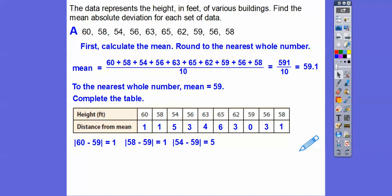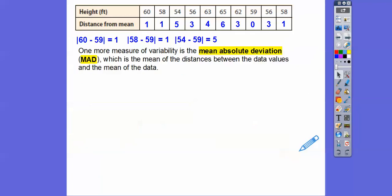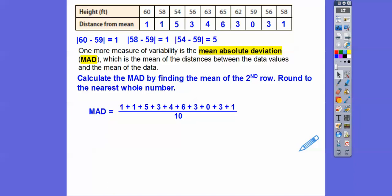And then now we just find the mean of those numbers. And that will be our MAD, our mean absolute deviation. It's the mean distance, mean of the distances between the data values and the mean of the data. Does that make sense? Now let's calculate the MAD by finding the mean of that second row. We're going to add up all of those numbers and divide by 10. 27 divided by 10 is 2.7, close to 3. So our MAD is close to 3.